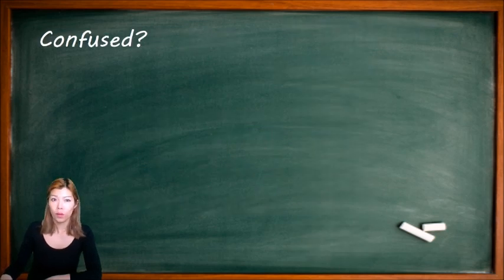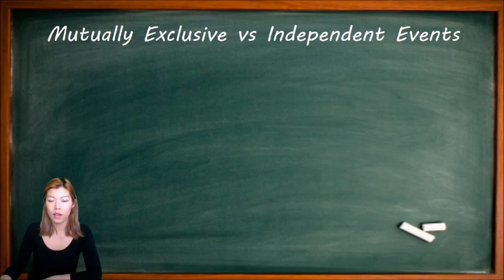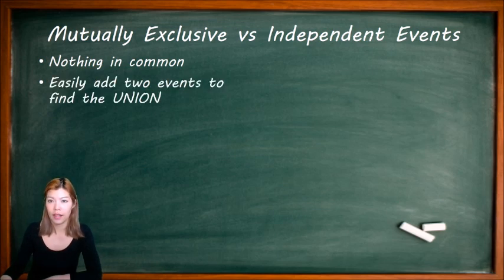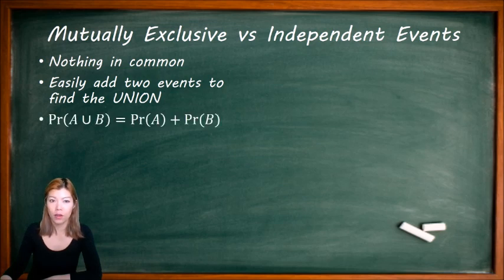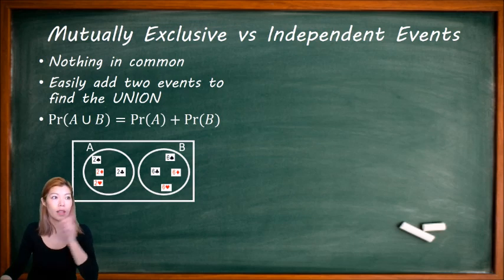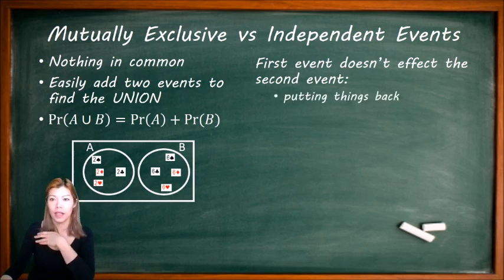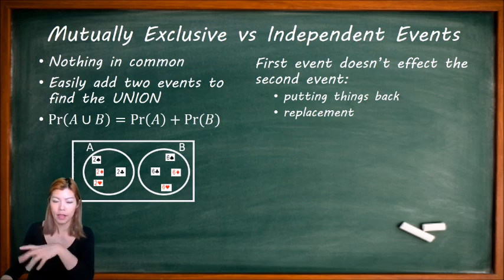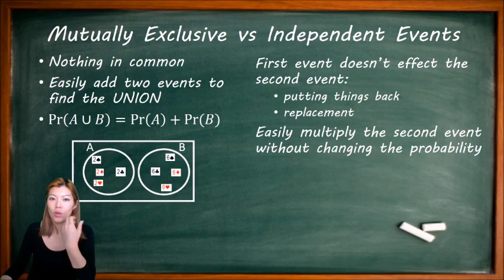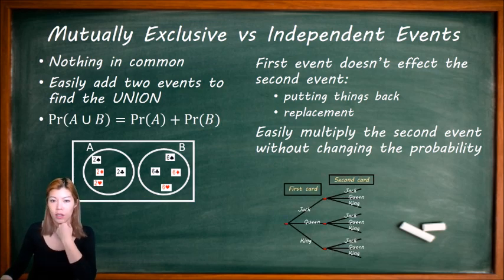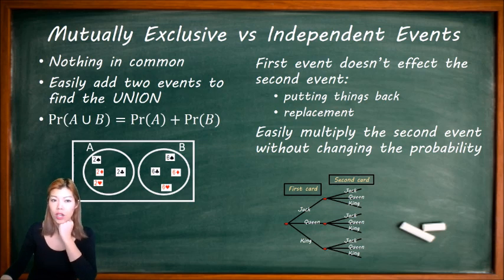Are you getting confused with all the terminology? Let's contrast and compare. Mutually exclusive is when there's nothing in common — no intersect — and you can simply add the two events to find A union B, so A union B equals A plus B. Whereas independent events are when the first event doesn't affect the second event — sometimes called 'with replacement' — and you multiply probabilities without changing them. In the card example, we had a third times a third; the second event was still a third.